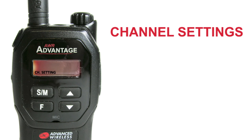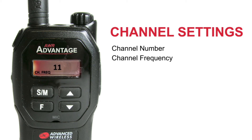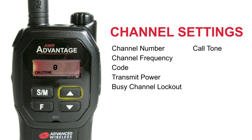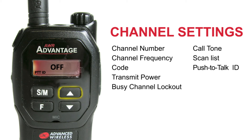The second menu is the channel setting. To enter, navigate, and select, it's the same procedure that we talked about with the radio settings menu. Under the channel settings menu, you'll find the channel number, channel frequency, code, transmit power, busy channel lockout, call tone, scan list, push to talk ID, compander, and scrambler.